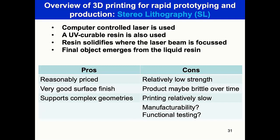Stereolithography (SL) uses a computer-controlled laser with a UV-curable resin. When light falls on the resin it solidifies, and the final object emerges from the liquid resin. Advantages include being reasonably priced, very good surface finish, and supporting complex geometries. Cons include relatively low strength, the product may become brittle over time, and printing speed is quite slow compared to other techniques. Manufacturability and functional testing remain question marks.